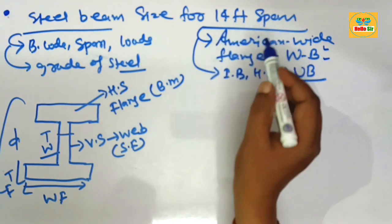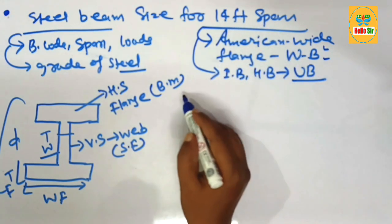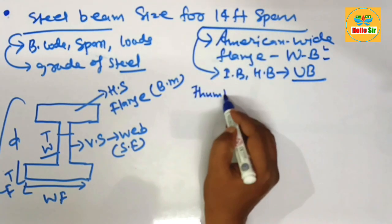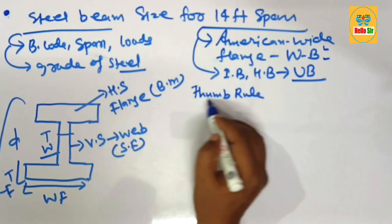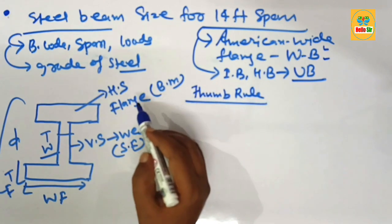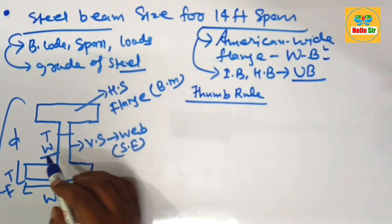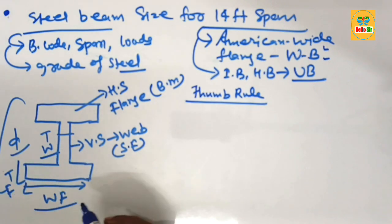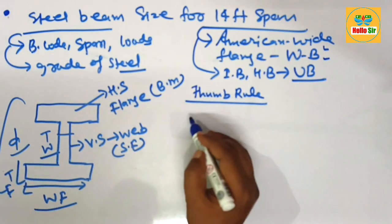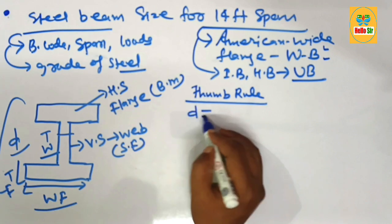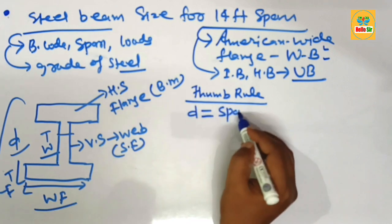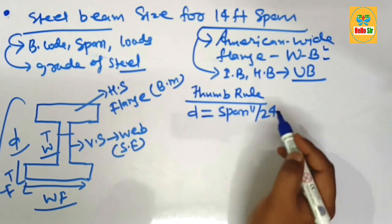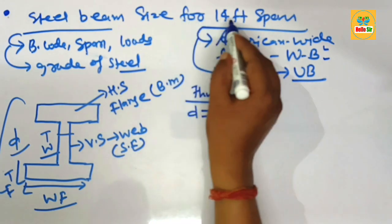Now we calculate as per the thumb rule for sizing of a steel beam for a 14-foot span. Sizing the steel beam means finding the depth section of the beam and the width of the flange. The depth section of the steel beam should equal your span in inches divided by 24.